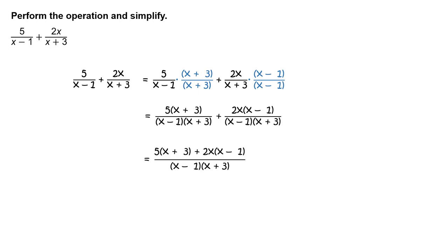Now that the fractions have a common denominator, you can add and write 5 times the quantity x plus 3 plus 2x times the quantity x minus 1, divided by the quantity x minus 1 times the quantity x plus 3.